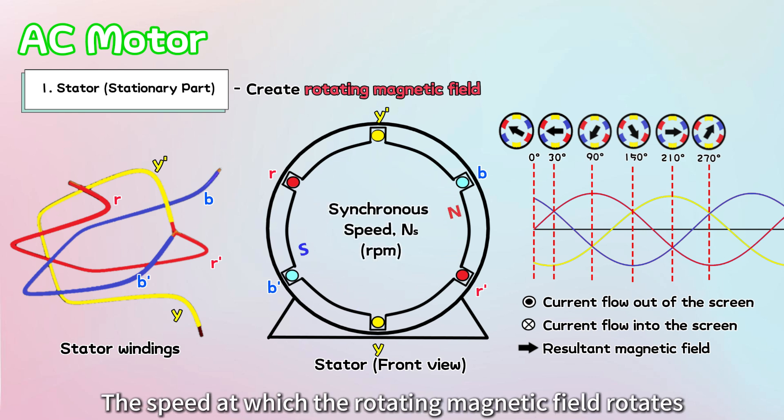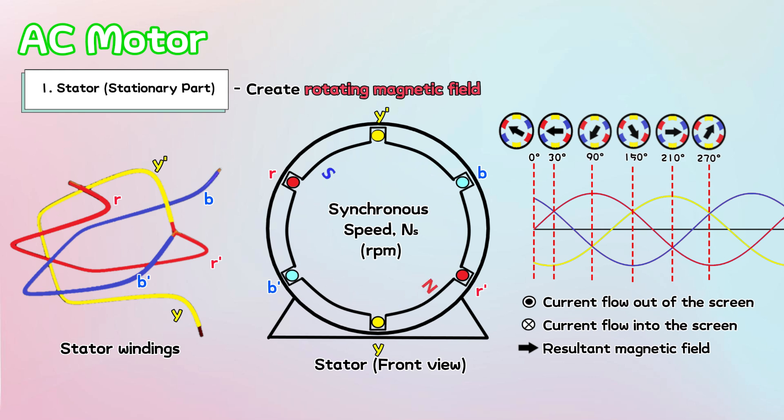The speed at which the rotating magnetic field rotates is known as synchronous speed, measured in rounds per minute, or RPM. This simple illustration explains how a three-phase current generates a rotating magnetic field at the stator, without any physical movement.